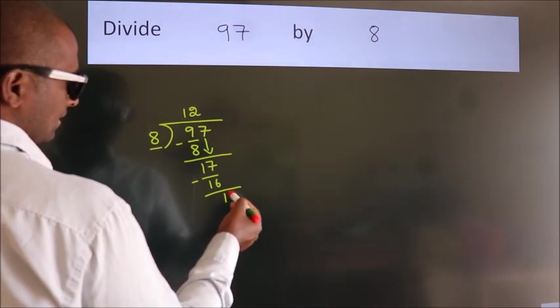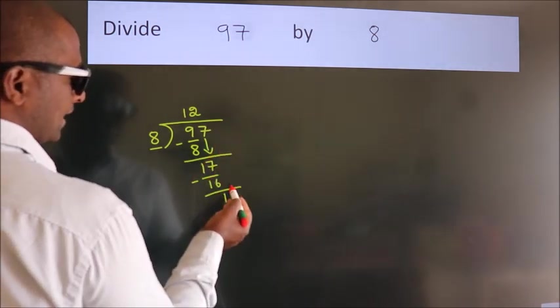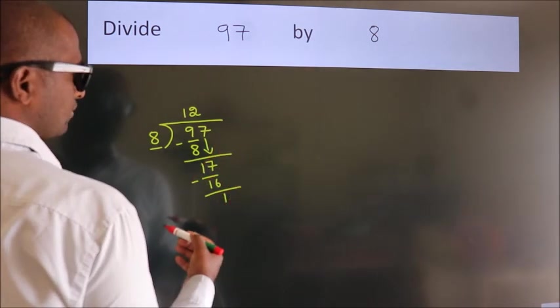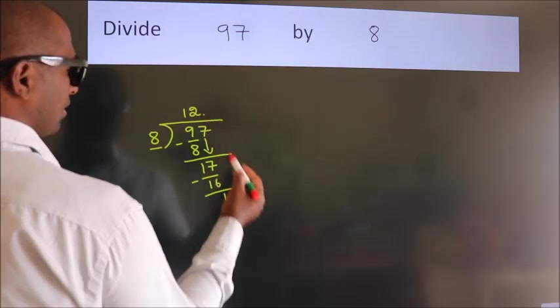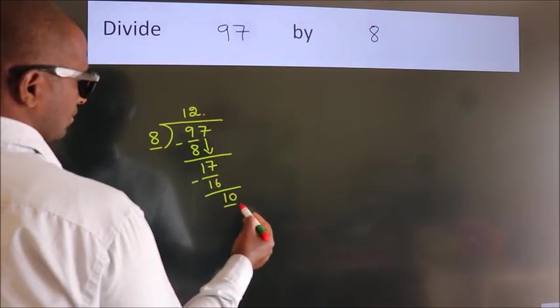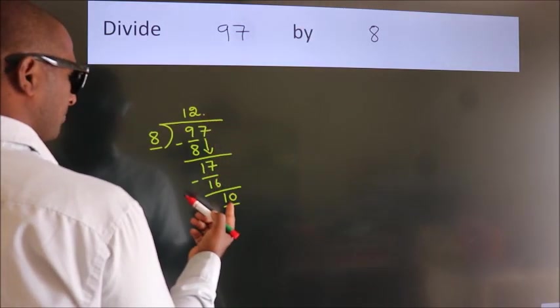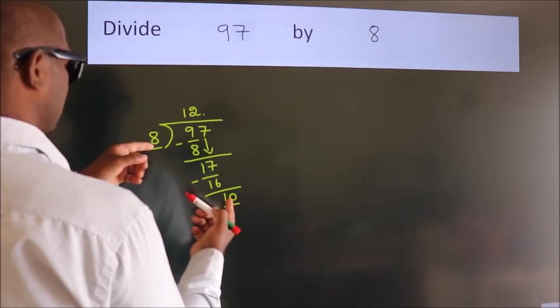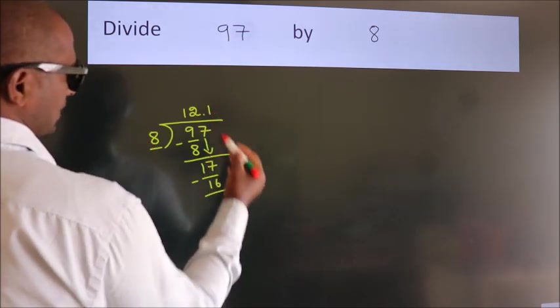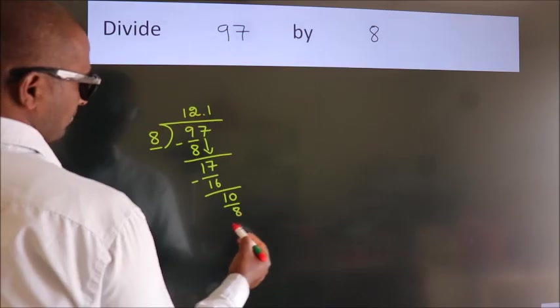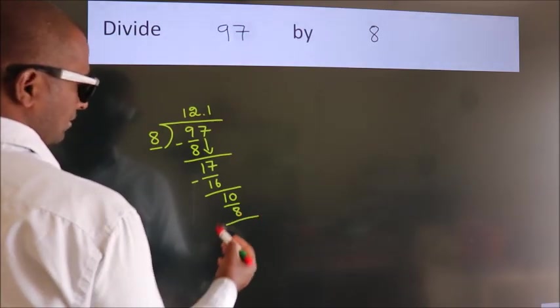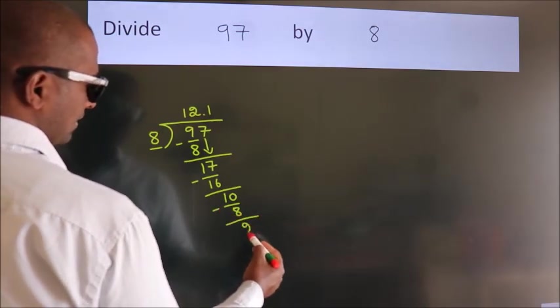After this, no more numbers to bring down. So, what we do is we put a dot and take 0. So, 10. A number close to 10 in the 8 table is 8 times 1 is 8. Now, we subtract. We get 2.